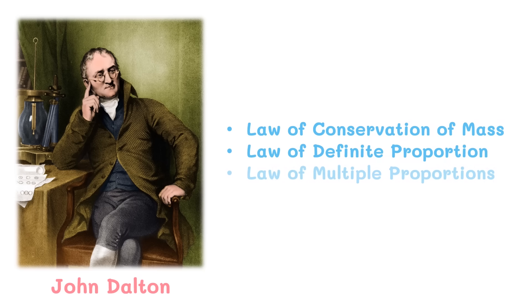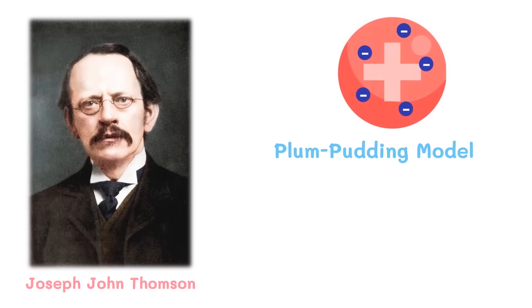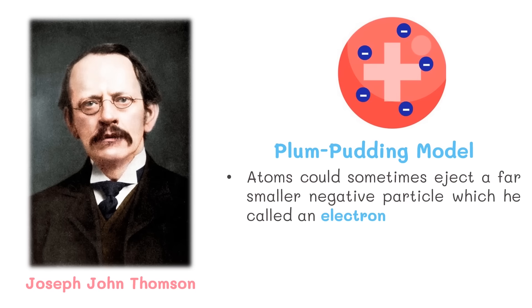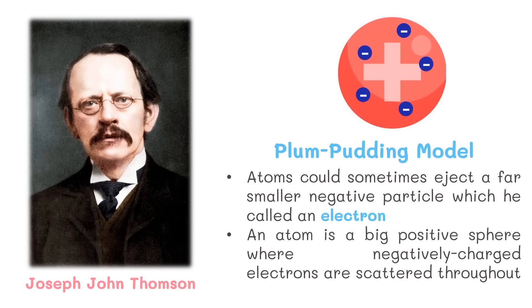The cathode ray experiments in 1897 by various scientists, including Joseph John Thomson, led to the discovery of the electron. Thomson proposed the plum pudding model. He found that atoms could sometimes eject a far smaller negative particle, which he called an electron. His discovery showed that atoms were not indivisible but composed of subatomic particles that are electrically charged. He believed that an atom is a big positive sphere where negatively charged electrons are scattered throughout.